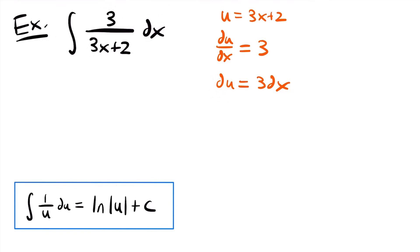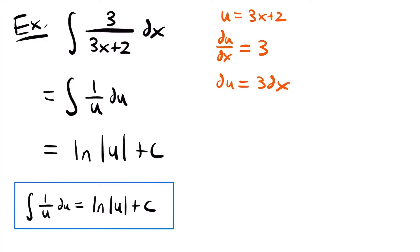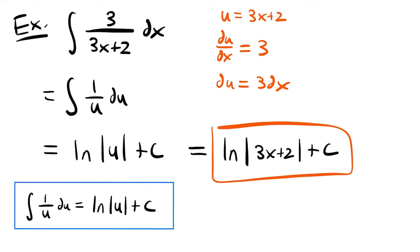Rewriting this integral in terms of u, we have the integral of 1 divided by u du. We replaced 3x plus 2 with u and replaced 3 dx with du. We know that the integral of 1 divided by u du is the natural log of the absolute value of u plus c. Replacing u with what we set it equal to, 3x plus 2, our final answer is the natural log of the absolute value of 3x plus 2 plus c. That is the antiderivative of this function.